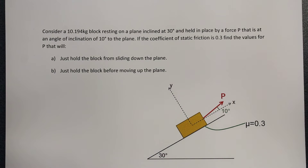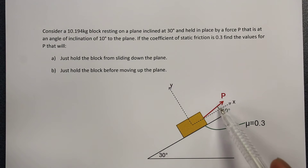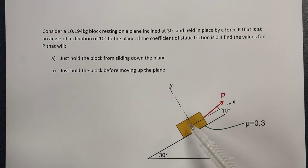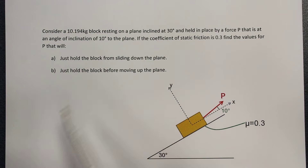Hey guys, this is just an example of a friction on an inclined plane question. The question reads like this: consider a 10.194 kg block resting on a plane inclined at 30 degrees. It is held in place by a force P, which is at an angle of inclination of 10 degrees to this plane. If the coefficient of static friction for the system is 0.3, find the values of P that will just hold the block from sliding down the plane.